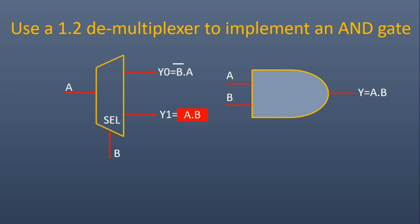This is how we implement an AND gate with the help of a 1-to-2 demultiplexer. We apply A at the input I, B at the select line, and as we know it has two outputs Y0 and Y1. Y0 will be equal to B̄ · A, and Y1 will be equal to A · B, which is nothing but the output of an AND gate. This is how we implement an AND gate with the help of a 1-to-2 demultiplexer.